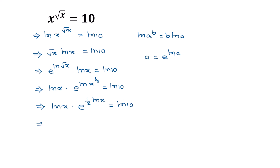To make this part match the exponential argument — which is 1/2 times ln of x — we multiply both sides by 1/2, so that this part and the exponent part will be the same. Multiplying 1/2 by both sides, we can write 1/2 times ln of x...